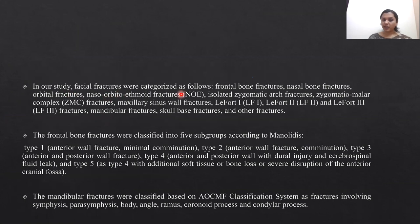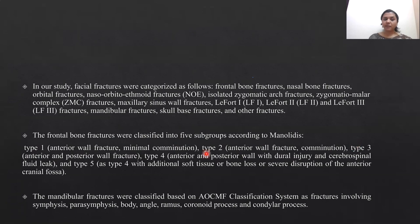In our study, facial fractures were categorized as: frontal bone fractures, nasal bone fractures, orbital fractures, naso-orbito-ethmoidal fractures, isolated zygomatic arch fractures, zygomatico-malar complex fractures, maxillary sinus wall fractures, Le Fort fractures, mandibular fractures, and skull base fractures. Frontal bone fractures were further classified into five subgroups: type 1 is anterior wall fracture with minimal comminution, type 2 is anterior wall fracture with comminution, type 3 is anterior and posterior wall fracture, type 4 is similar but with additional soft tissue or bone loss or severe disruption of the anterior cranial fossa. Mandibular fractures were classified based on the AO/CMS classification as fractures involving the symphysis, parasymphysis, body, angle, ramus, coronoid process, and condylar process.